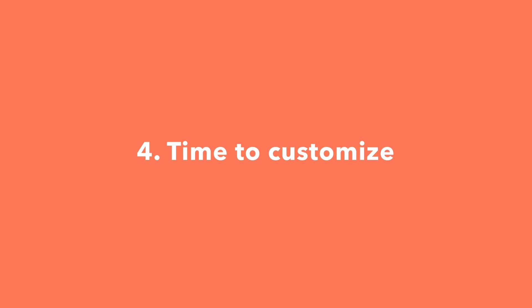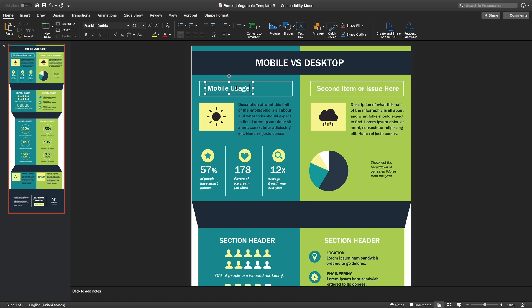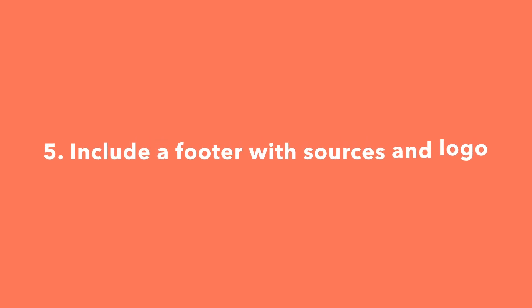Once you've selected a template, it's time to customize. This is the most time-consuming part, but it's also the most fun. Come up with a catchy title, plug in your data and content, and adjust your font sizes and formatting. Feel free to switch up the graphics and colors too, so they're relevant to your brand and the data you're providing. For other templates, you can use the simple graphs and charts provided by PowerPoint to create things like the bar graph or the pie chart. Finally, make sure you include a footer with your sources and logo so people know who created the infographic if it gets shared on social media or embedded on other websites.